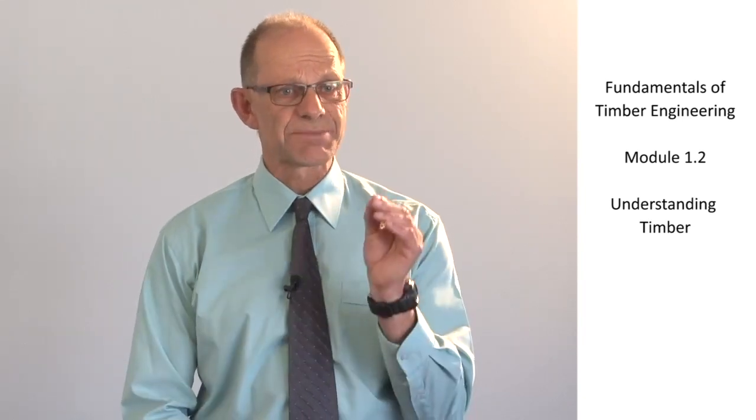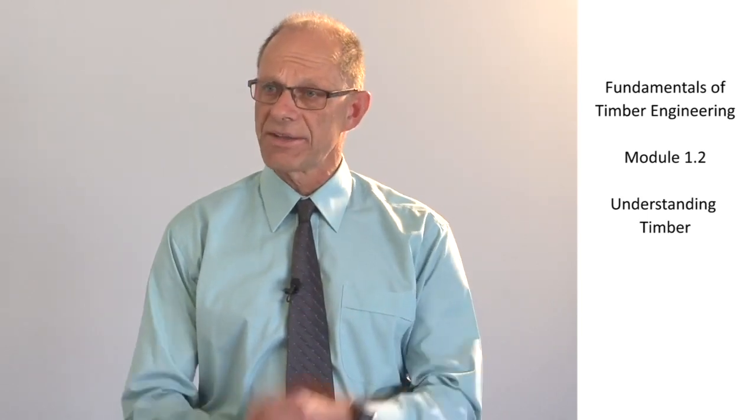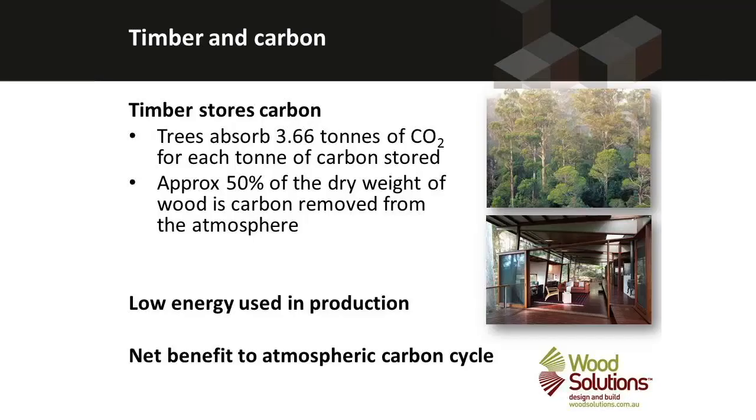Firstly, carbon. Trees make use of photosynthesis to take carbon dioxide out of the atmosphere and lock the carbon away inside the trunk of the tree. About half the weight of the wood in a piece of timber is carbon that has come out of the atmosphere. So trees are really good at removing carbon from the atmosphere and the longer the timber is in service, the more the carbon is out of the atmosphere.